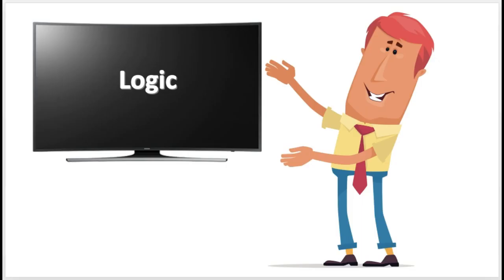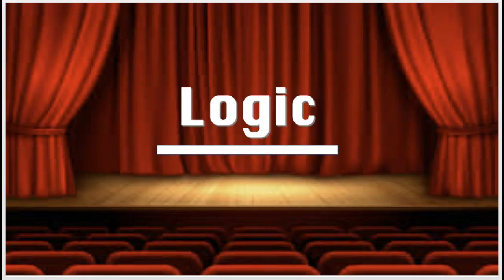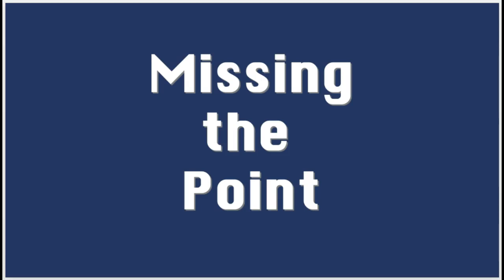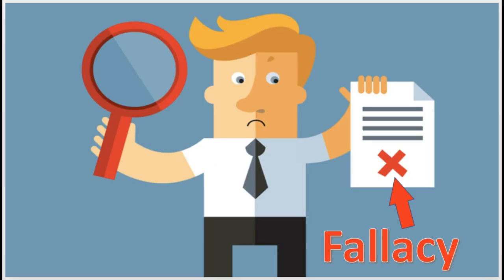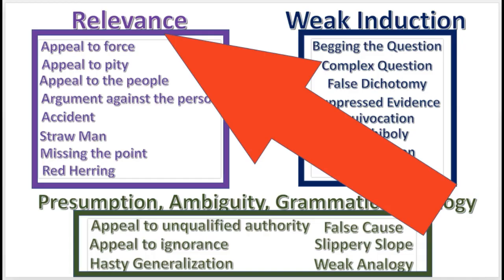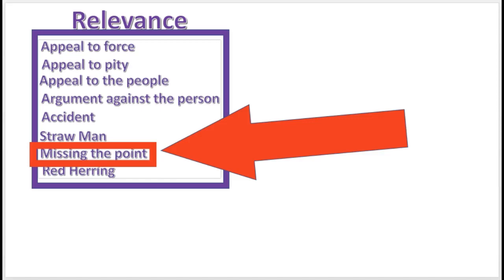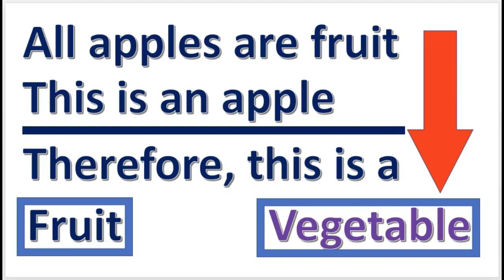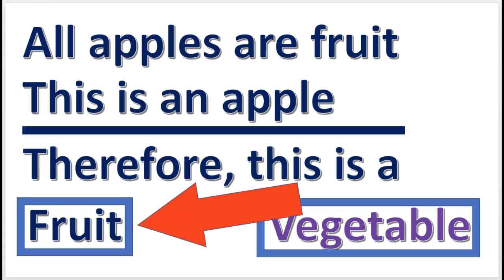Ladies and gentlemen, welcome to this episode of Logic. Missing the point fallacy is the topic of this video. A fallacy is a defect or an error in an argument. Here's a list of some 22 informal fallacies. Missing the point is in the fallacy of relevance category. Missing the point fallacy is committed when someone draws a different conclusion than the one that is implied by the premises.